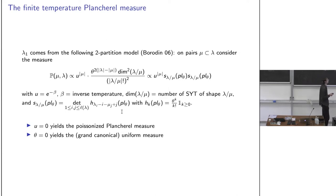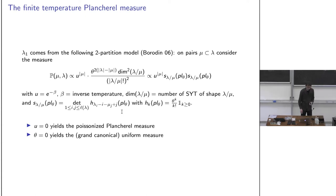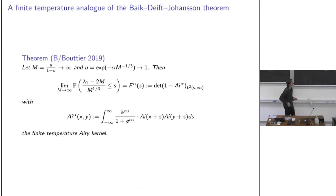When u = 0, μ disappears and you recover the Plancherel distribution. When θ = 0, λ must equal μ and you recover the uniform distribution. The parameter u should be thought of as e^{-1/temperature}, which will become relevant shortly. The main result follows.